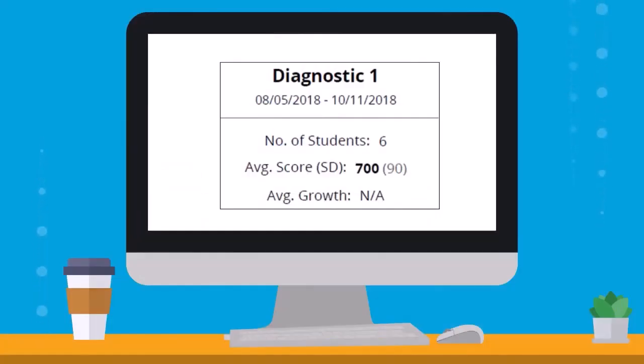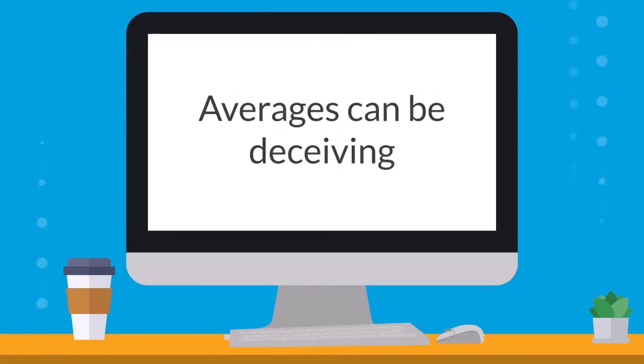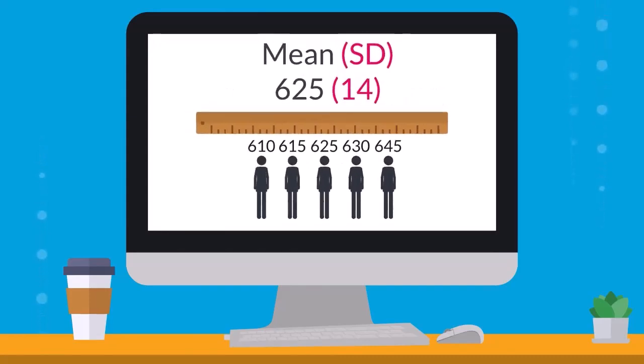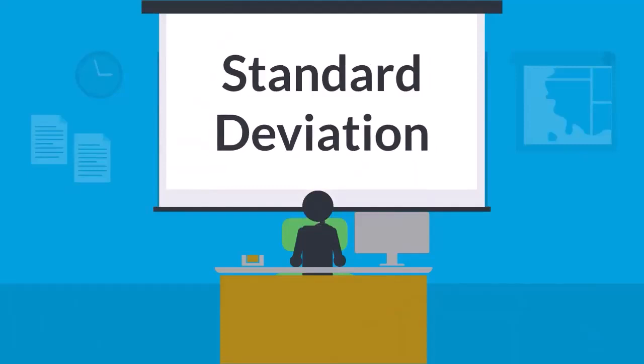Now when you see mean scores with numbers in parentheses after them, labeled SD, you'll know what's really going on. Averages can be deceiving, but the standard deviation will help you get a sense of what the distribution of scores really looks like. We hope you're as excited as we are to go check out your own score reports and apply your knowledge of standard deviation.